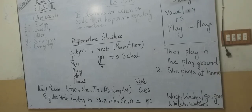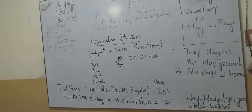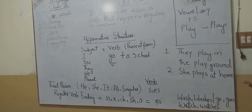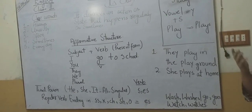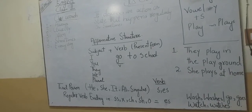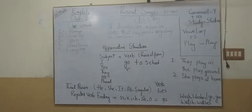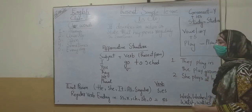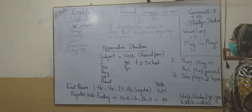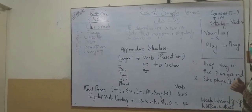Present simple tense is also used to describe permanent situations. For example: 'She lives in Paris' — meaning she has been living there for years. A doctor says 'I treat my patients.' Another example of a permanent fact: 'I speak four languages.' These permanent facts are also included in present simple tense.